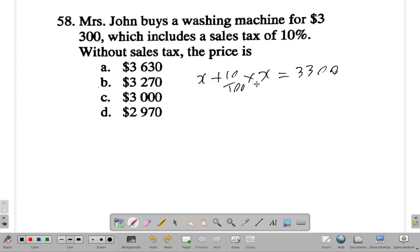Now first of all, without the tax, if time was running out fast and you were guessing, we didn't want to try to have to guess four answers. You would say without the tax, the amount was smaller than 3300.